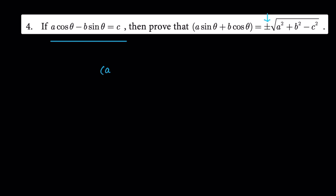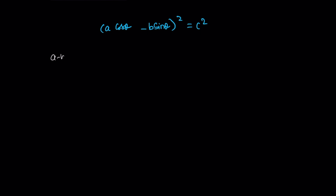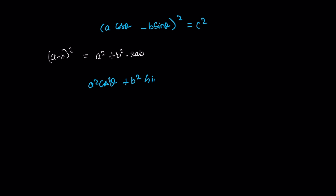If a cosθ minus b sinθ is equal to c, then squaring both sides: (a cosθ minus b sinθ)² is equal to c². Using the (a minus b)² formula — a² plus b² minus 2ab — we get: a² cos²θ plus b² sin²θ minus 2ab cosθ sinθ is equal to c².